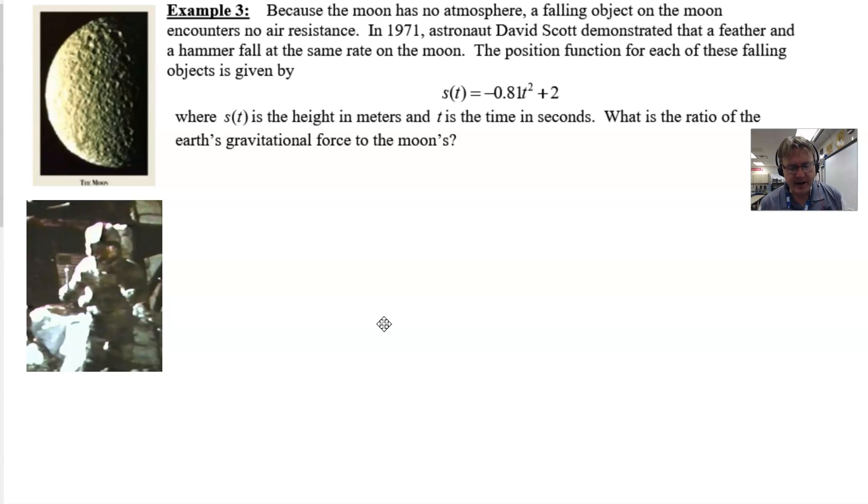Now, to do this particular problem, we would have to understand a little bit of more information because we have this position function for falling objects on the moon, denoted by s(t) as -0.81t² + 2. The two is going to act as the initial position. Probably makes sense because I think we talk about the height being measured in meters and the time in seconds. So this particular astronaut was going to drop something from about a two meter distance from the ground, a little bit more than maybe head high. So maybe he was actually going to raise his hand and then drop that hammer.